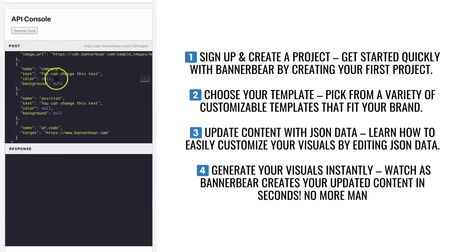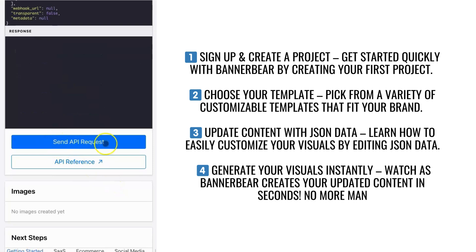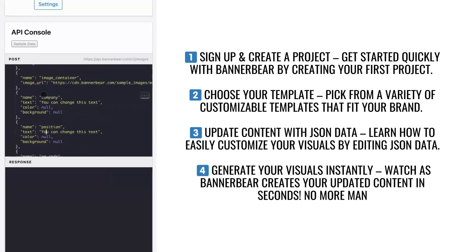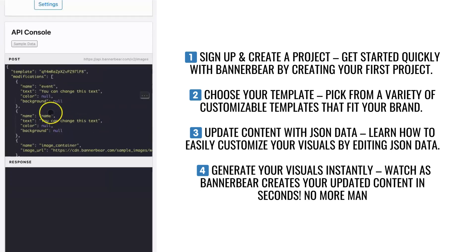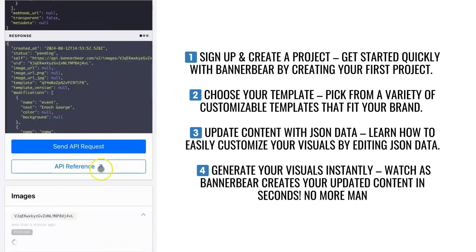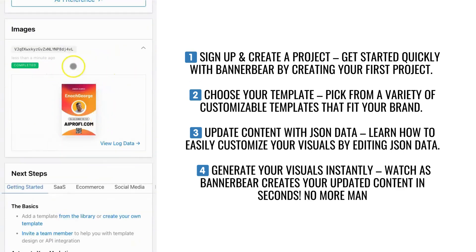What I am going to do is change the text here and then click on Send API Request. For example, I am going to change this text now and click Send API Request. This is an auto-generated image.